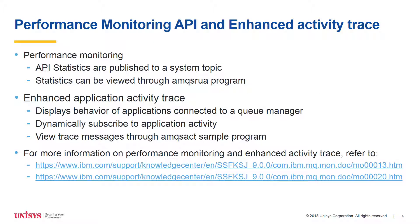Performance Monitoring API: API statistics are published to a system topic that help users monitor resources. These statistics can be viewed by running the AMQSRUA sample program or by writing an application that subscribes to the resource monitoring system topic.